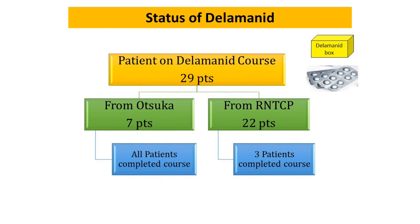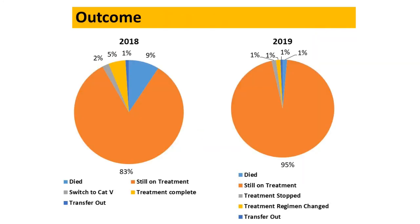Delamanid is available in the country but in short supply. We have used delamanid in 29 patients so far — 22 from RNTCP and 7 patients with extra-pulmonary TB through a compassionate use program, because the government does not allow its use in extra-pulmonary TB. These patients seem to be doing well. Outcome-wise, the guidelines say 50% of MDR and XDR patients are going to die. In 2018 our death rate was around 1%, and in 2019 we maintained that death rate. Most patients are still on treatment and doing well.